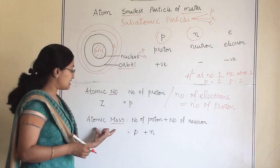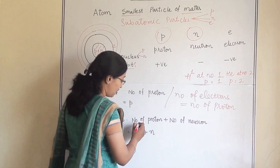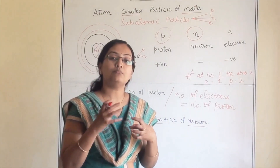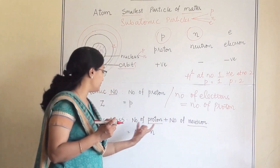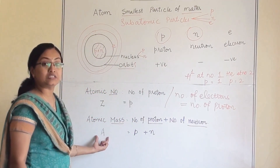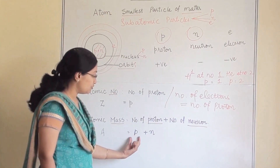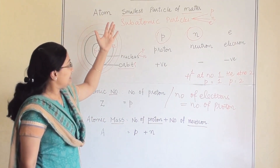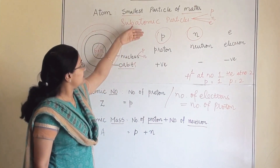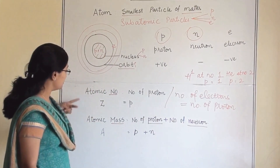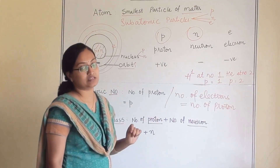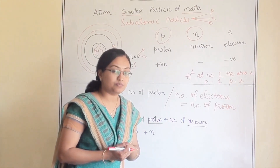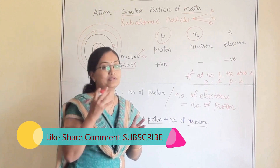Atomic mass is the sum of the number of protons and the number of neutrons: A = P + N. So atomic number Z gives the proton count, and atomic mass A gives the total count of protons plus neutrons. These five terms — proton, neutron, electron, atomic number, and atomic mass — are essential for understanding atomic structure.